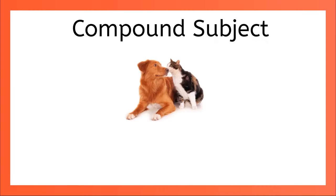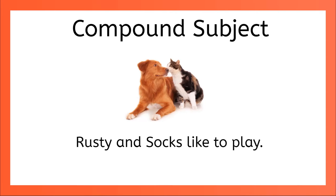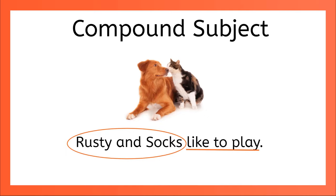Let's try another: Rusty and Socks like to play. Did you spot it? The sentence is about both Rusty AND Socks. Rusty and Socks is a compound subject, and they share the same predicate: like to play.